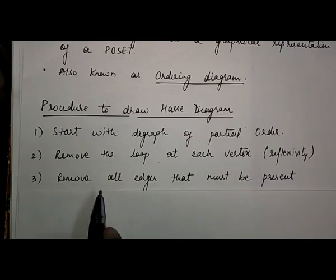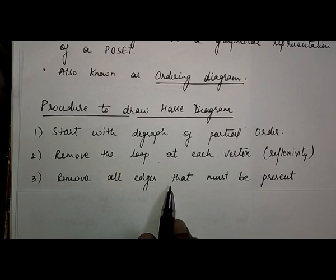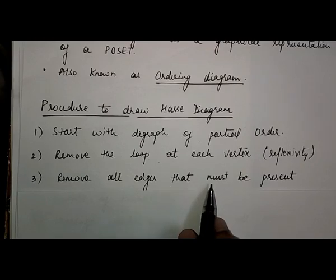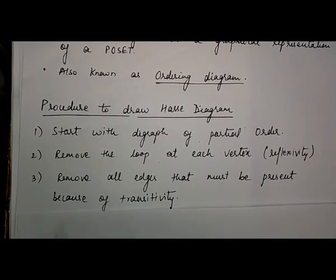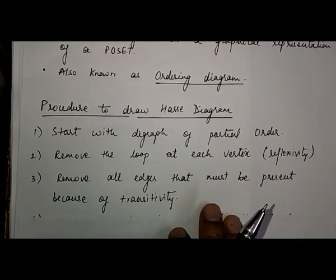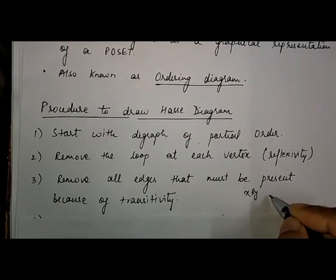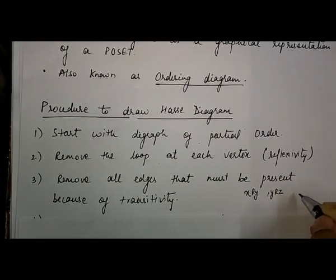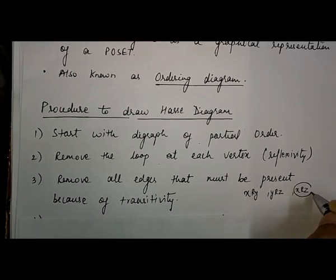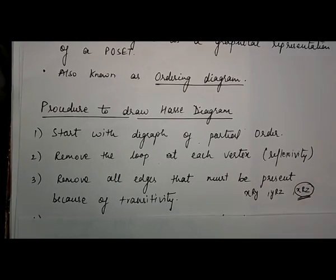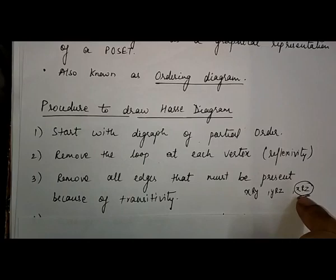The third step is to remove all the edges that must be present because of transitivity. Transitivity means: if x is related to y, and y is related to z, then x is related to z. We have to remove these edges that give the transitivity property.